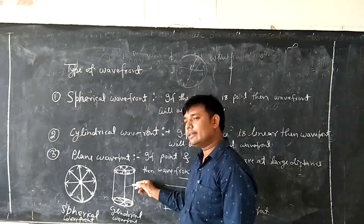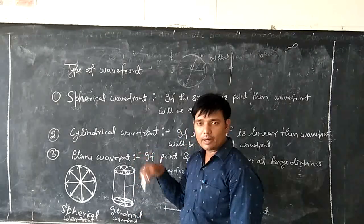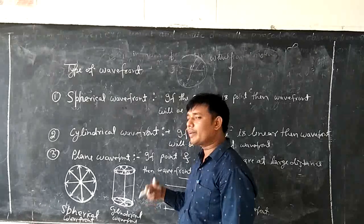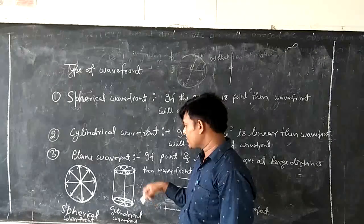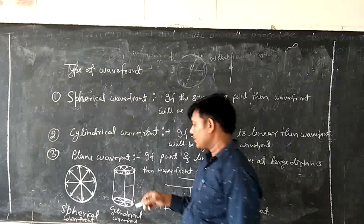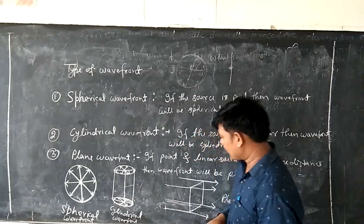We take a distance and move around a circle, 2πR radius, 2πR. This is a cylindrical wavefront.